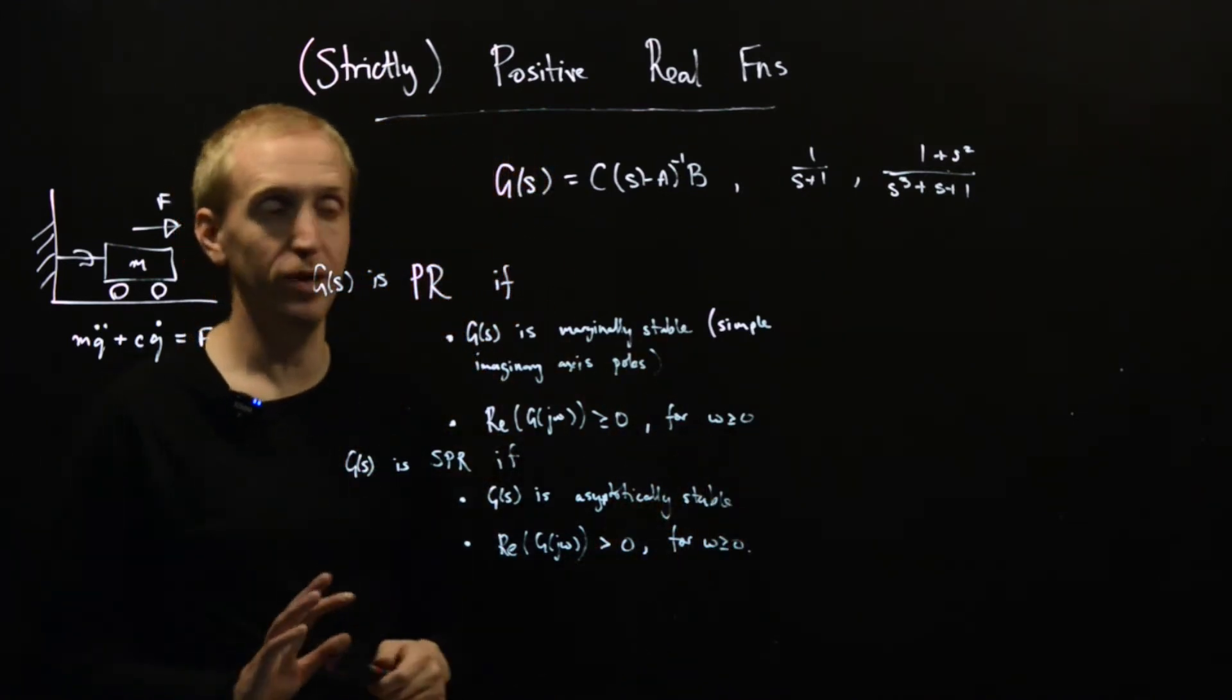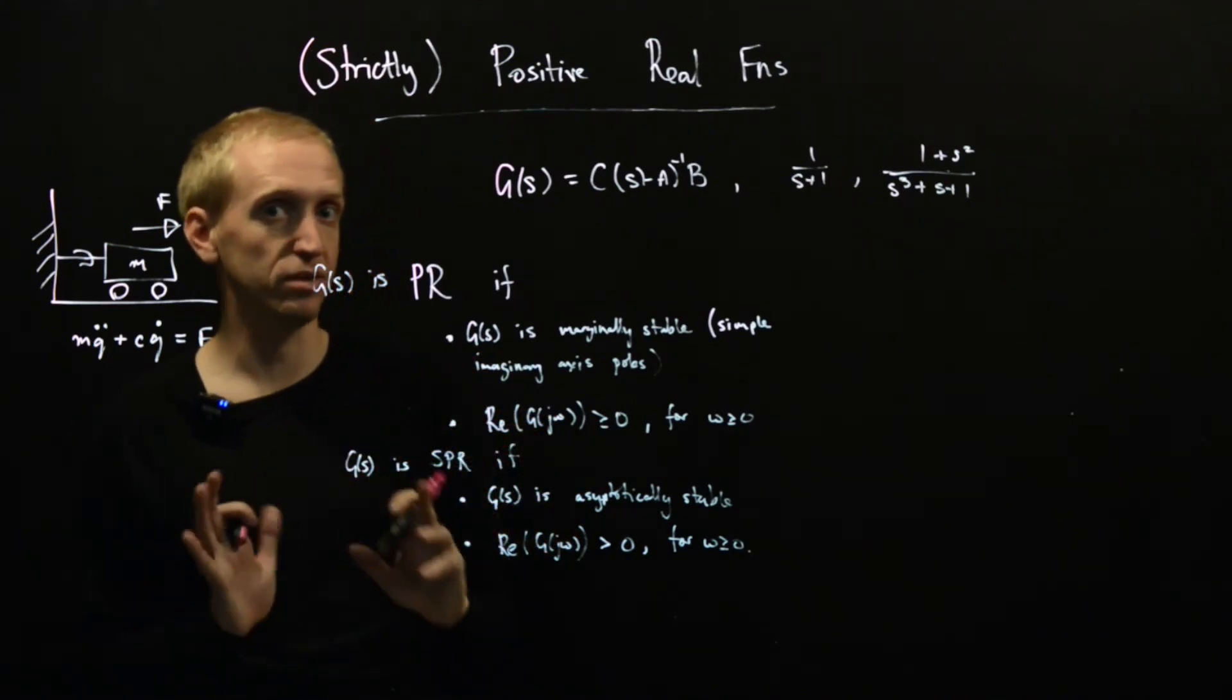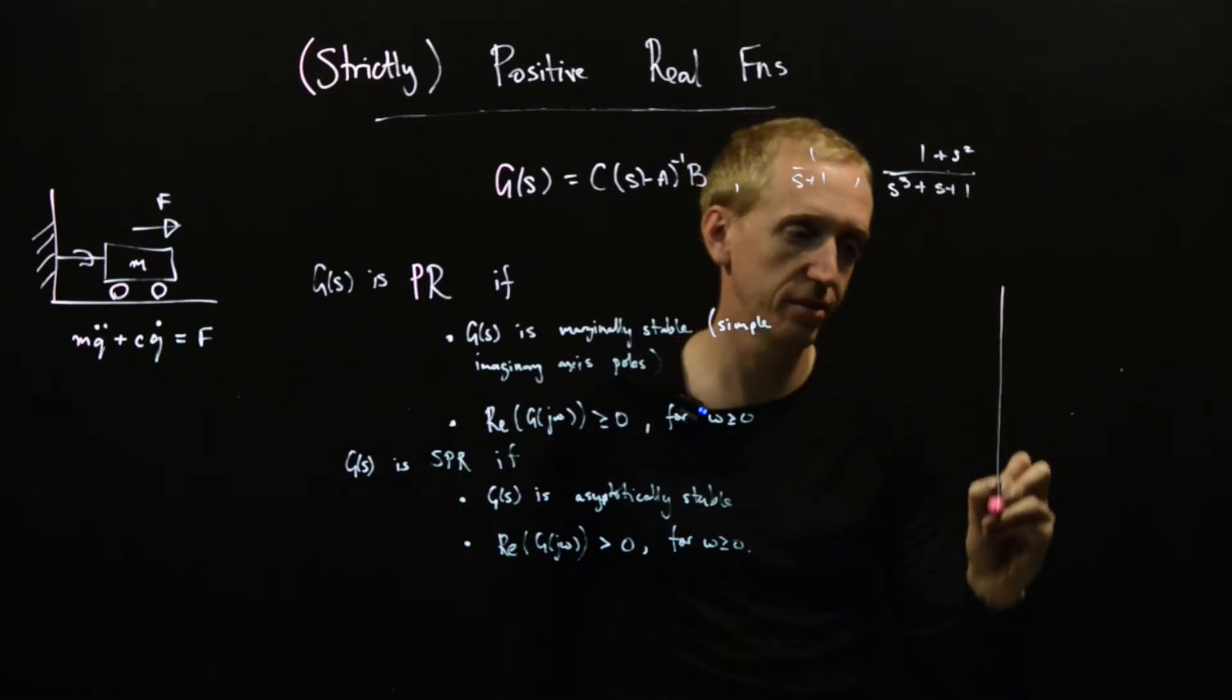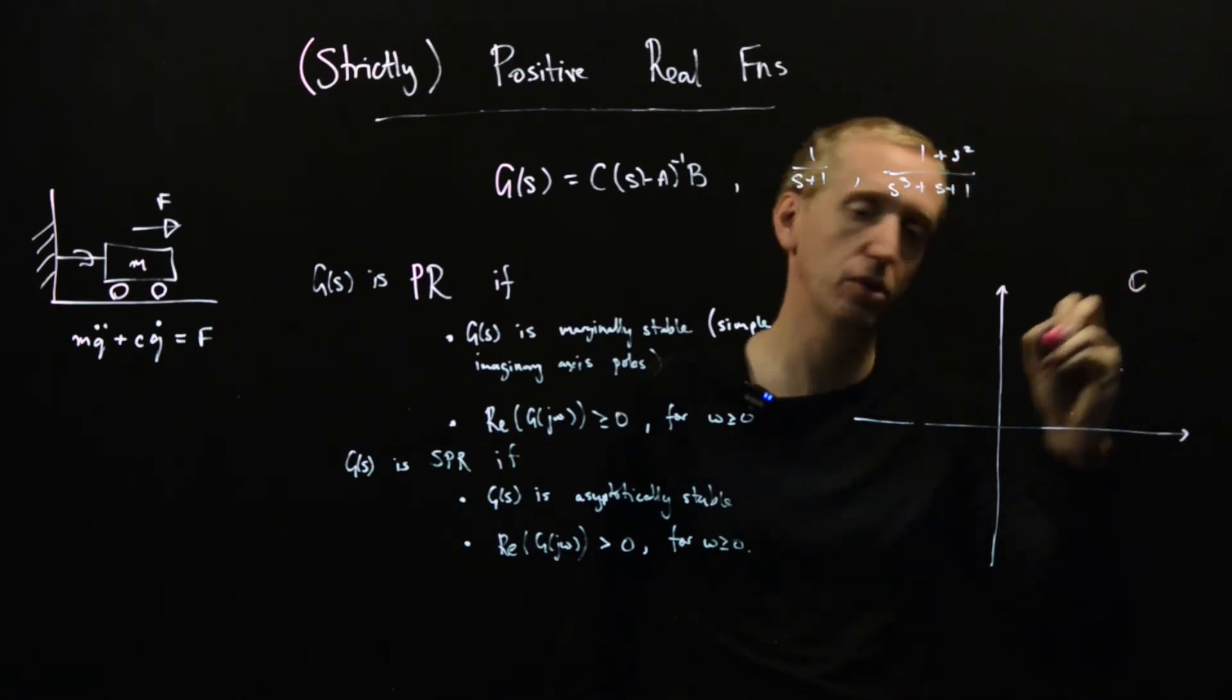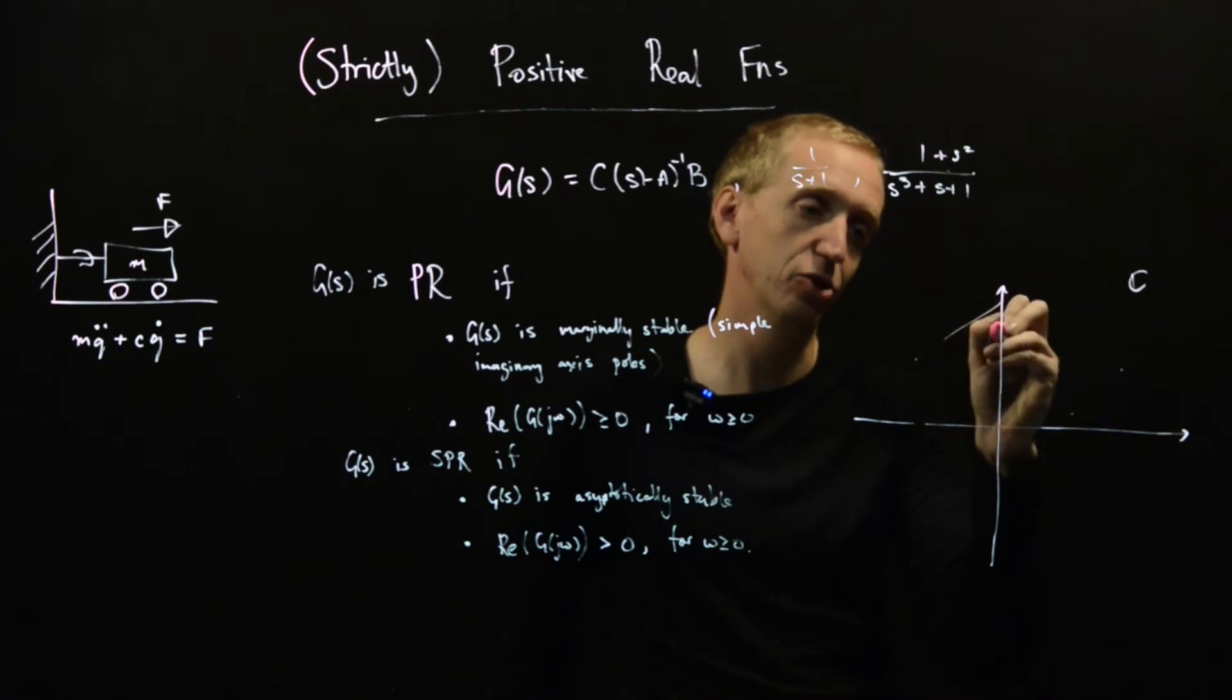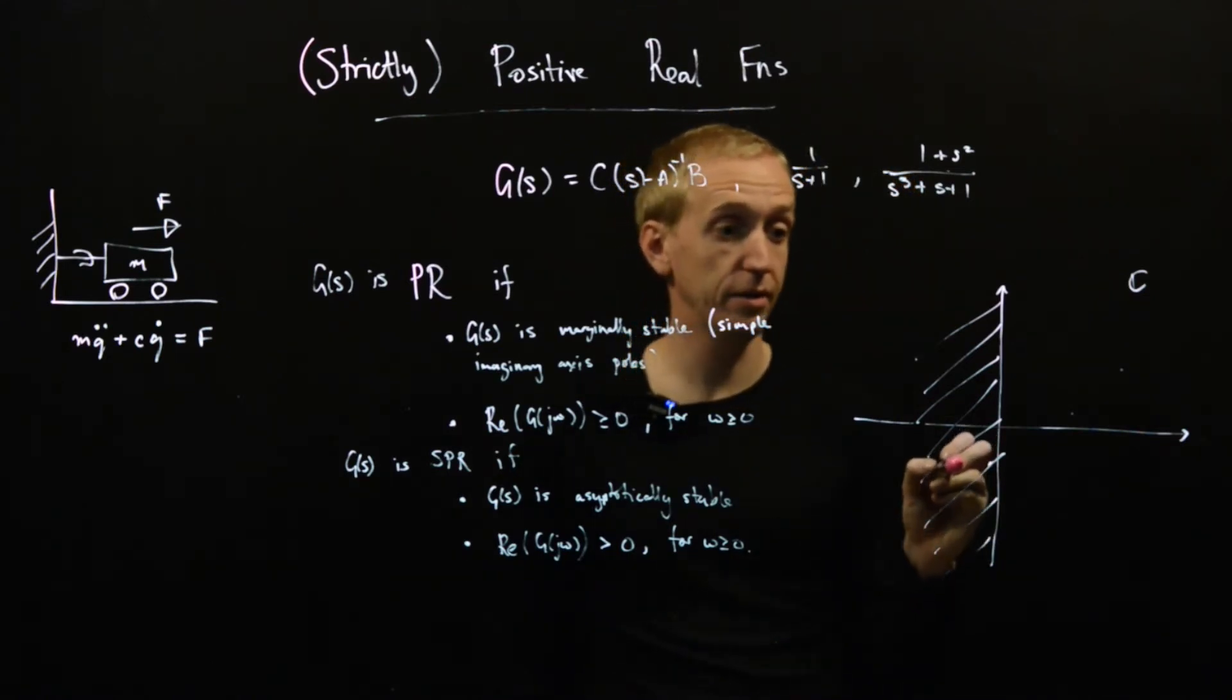So this looks a bit weird and a bit abstract. We can actually give a nice graphical interpretation of what this means, and maybe you already start to be seeing some kind of connections to the graphical nature of the circle criterion. So what does this weird second requirement mean? Graphically, well, we have some picture of the complex plane. We see that the frequency response has to lie in the right half plane, or the Nyquist diagram has to lie in the right half plane. So the left half plane is now banned from the perspective of Nyquist diagrams.